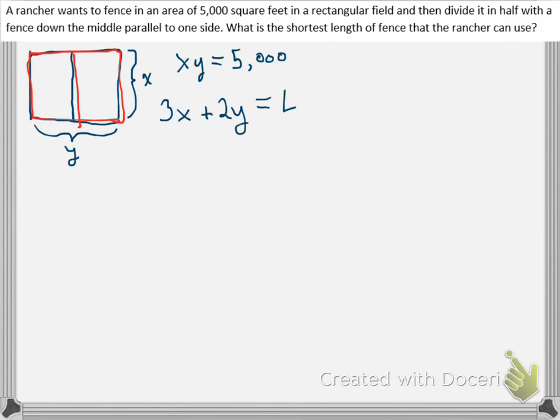So that's the one we're going to optimize. But before we do, we want to get it to a single variable. We'll take our constraint equation and solve it for one of our variables. For instance, y equals 5,000 over x. So when we plug this in, we have 3x plus 2 times 5,000 over x equals L, which we'll simplify. So 3x plus 10,000 over x equals L.